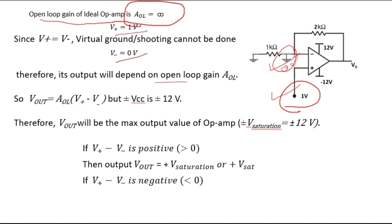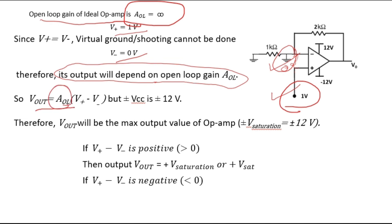The output will depend on open loop gain. The formula is: V_out equals open loop gain multiplied by (V+ minus V−), which is the non-inverting terminal potential minus the inverting terminal potential.